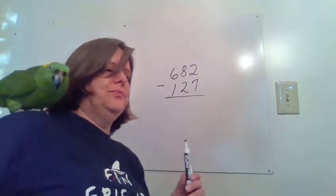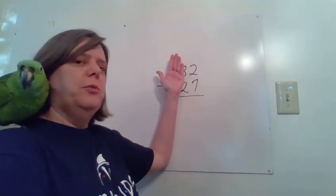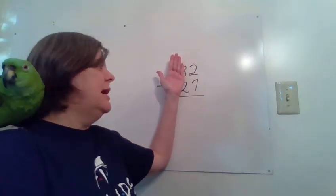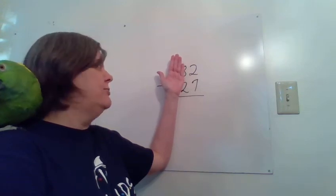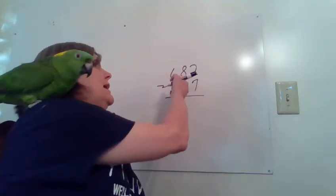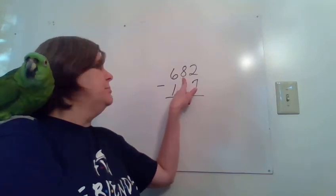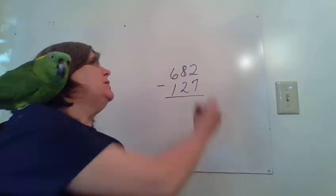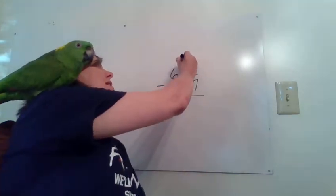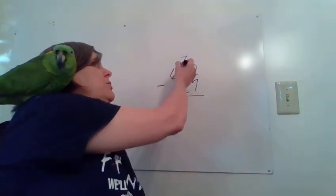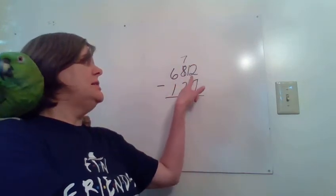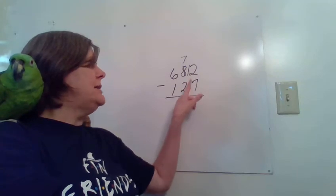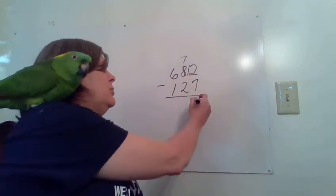We have two ones, and we need to take away or separate seven ones. Of course, we cannot do that. We only have two. So we have to come over here and get a ten. We have eight tens in this problem, so I'm going to take one of them and that will leave me with seven tens. I can move that ten over here to the ones place plus the two ones. Now I have 12 ones. Take away seven. 12 minus 7 equals 5.